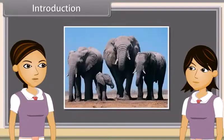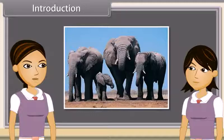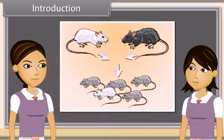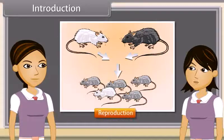Reproduction is the ability of all organisms to produce young ones similar to themselves in most of their characters. We can also say the process by which a species is continued is called reproduction.